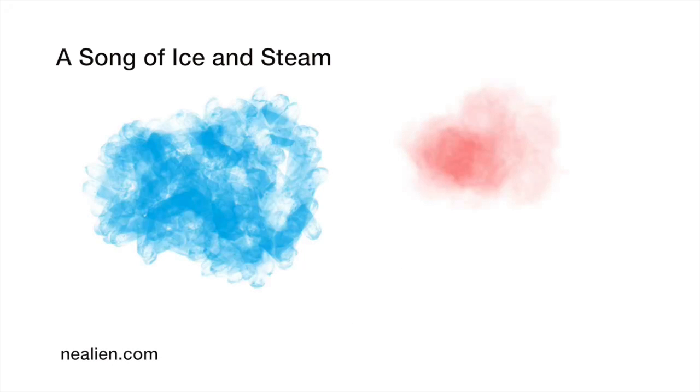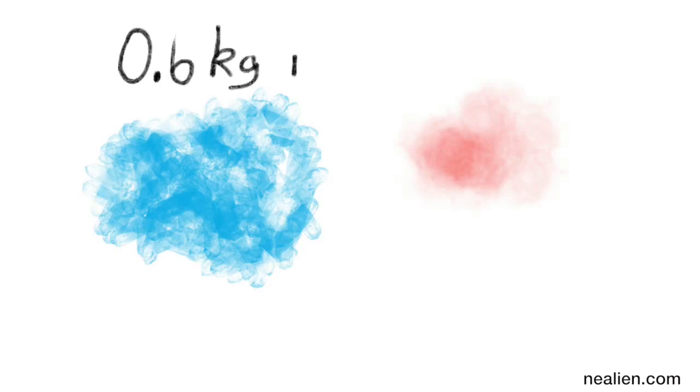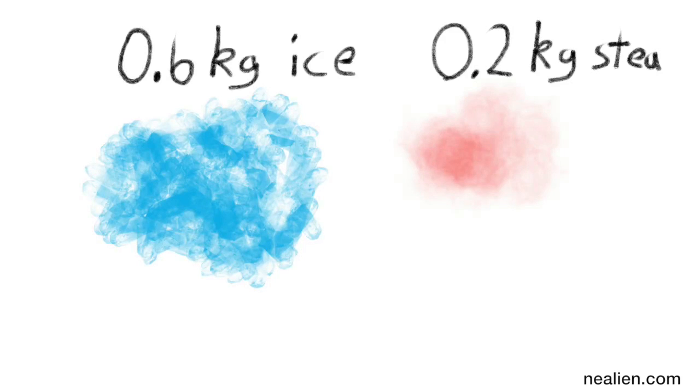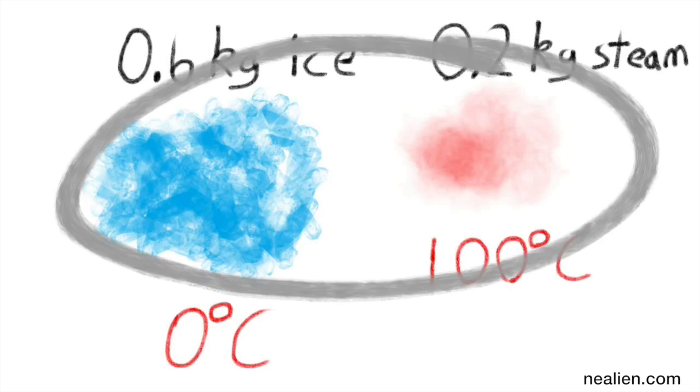We're going to look at what happens when you have 0.6 kilograms of ice at zero degrees Celsius and 0.2 kilograms of steam at 100 degrees Celsius.